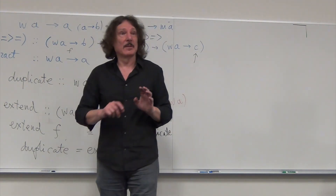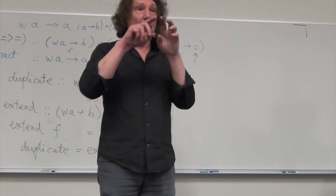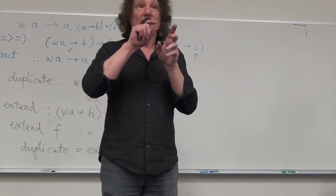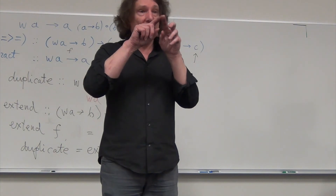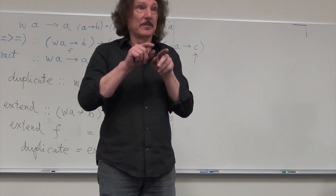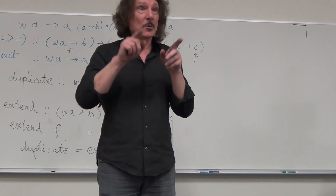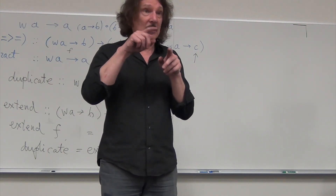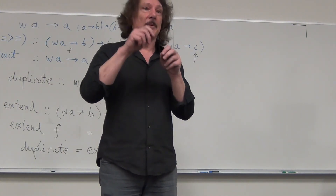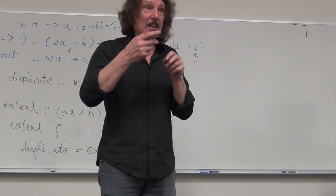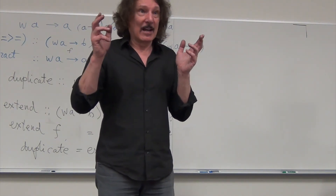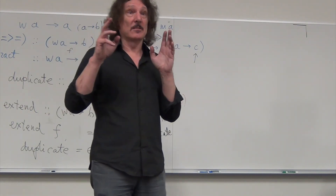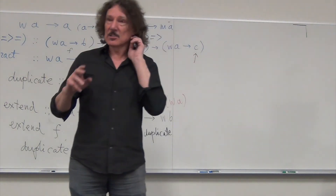A Kleisli arrow, in this case, would be a way of calculating the value in this location based on the nearest neighborhood. Because there is a rule: add up all the neighbors, and if they are equal to three, then you will be alive; otherwise, you will die. So the Kleisli arrow tells you whether you will survive or die in the next generation.